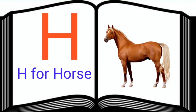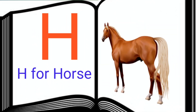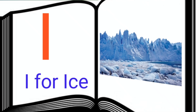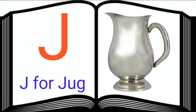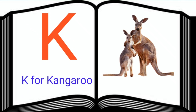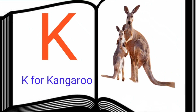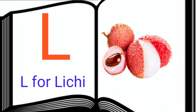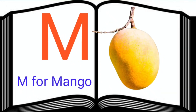H. H for Horse. I. I for Ice. J. J for Jug. K. K for Kangaroo. L. L for Litchi. M. M for Mango.